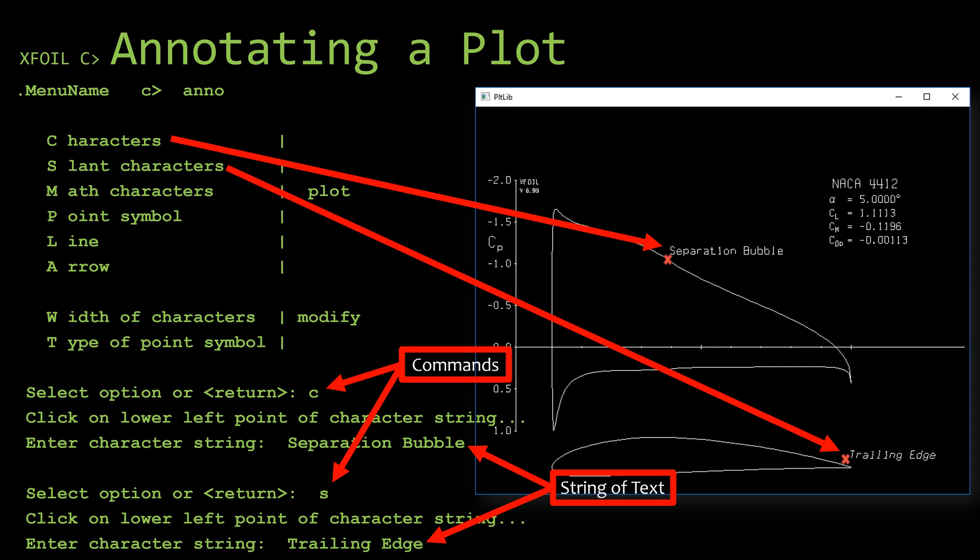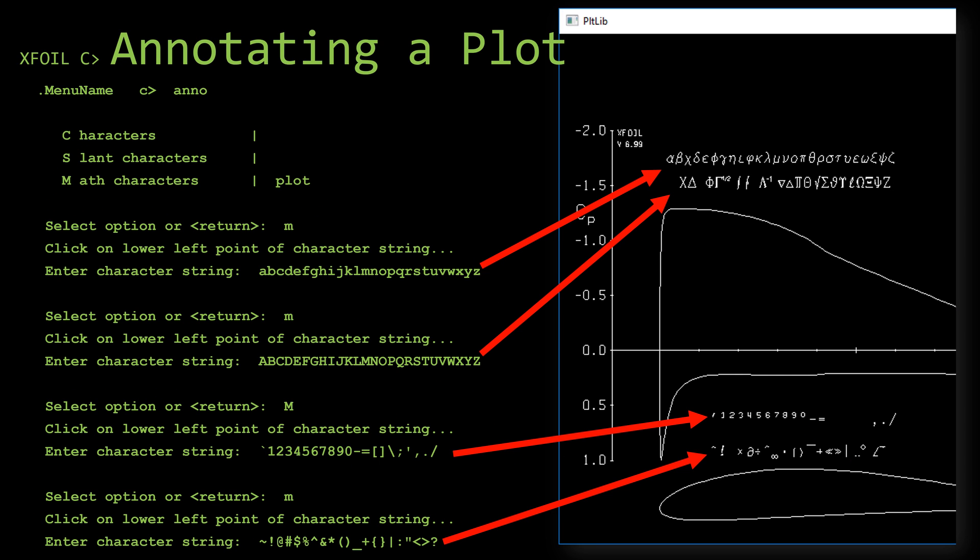I went ahead and added small red X's to show you approximately where I clicked for the text to be generated where it's at. Now, both of these are really good at identifying properties of the graph or making quick notes about the graph. Maybe an interpretation of what you see in the graph. The next plot command would be math characters.